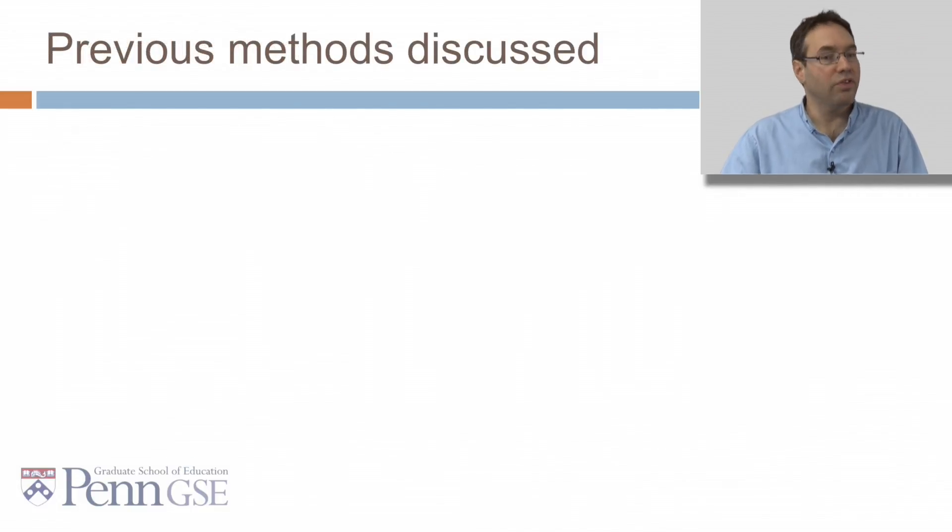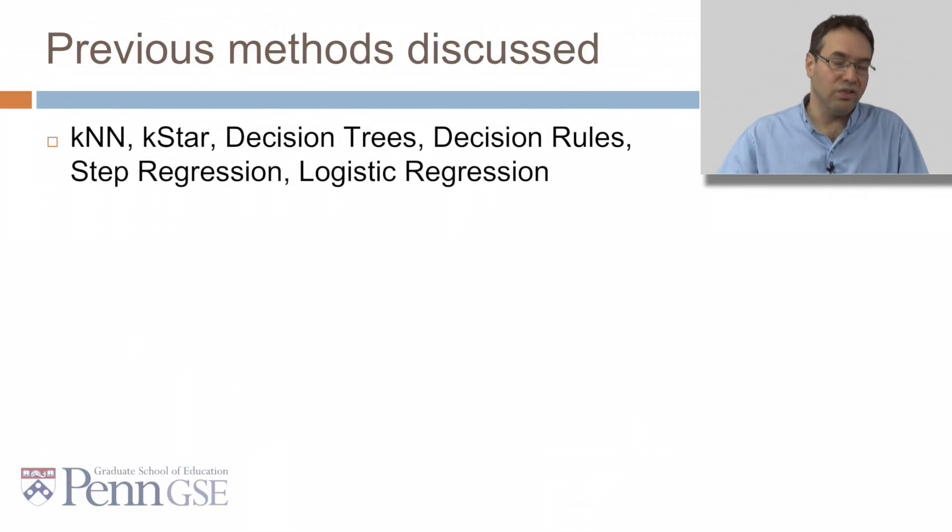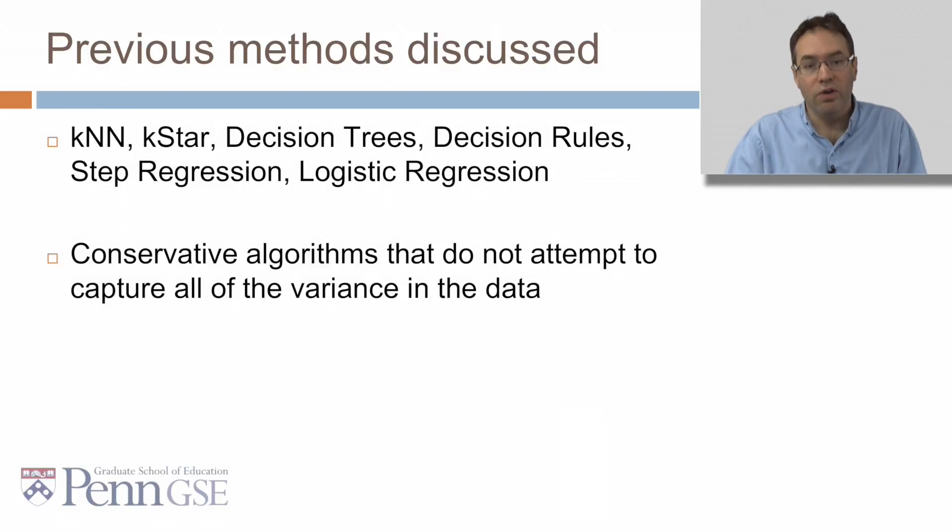So we talked about a lot of previous methods so far this week. K-nearest neighbor, K-star, decision trees, decision rules, step regression, logistic regression. These are all conservative algorithms that don't attempt to capture all the variance in the data. And frankly, most of the work in educational data mining has used these kind of algorithms because they tend to work pretty well for educational problems.